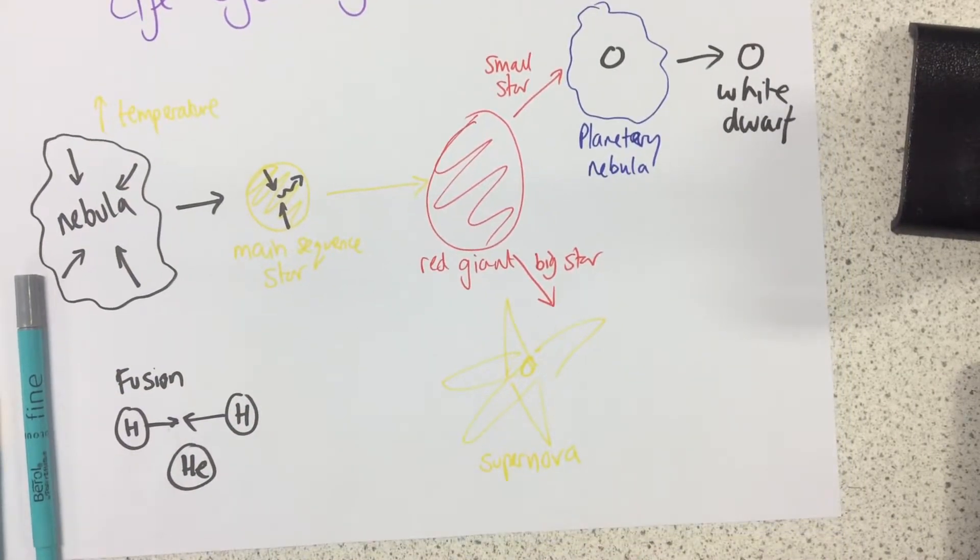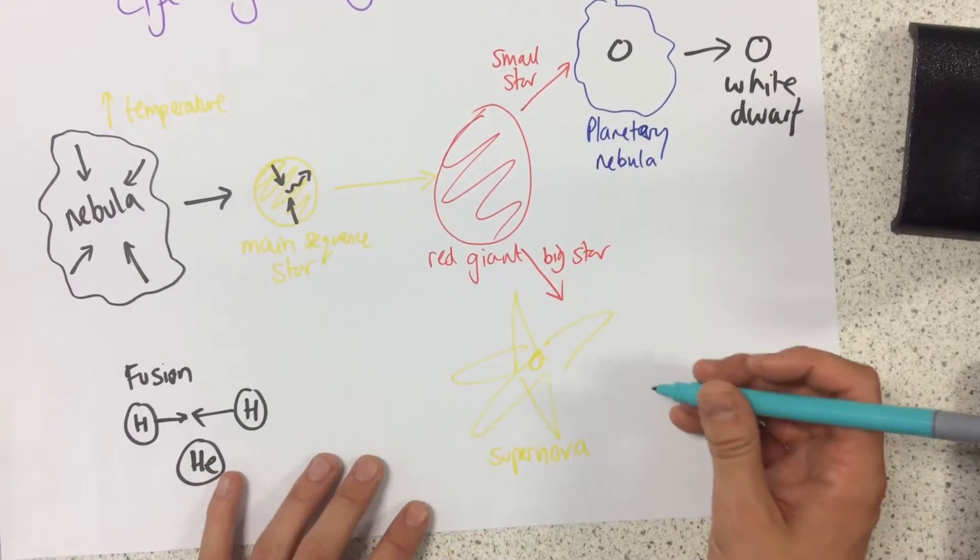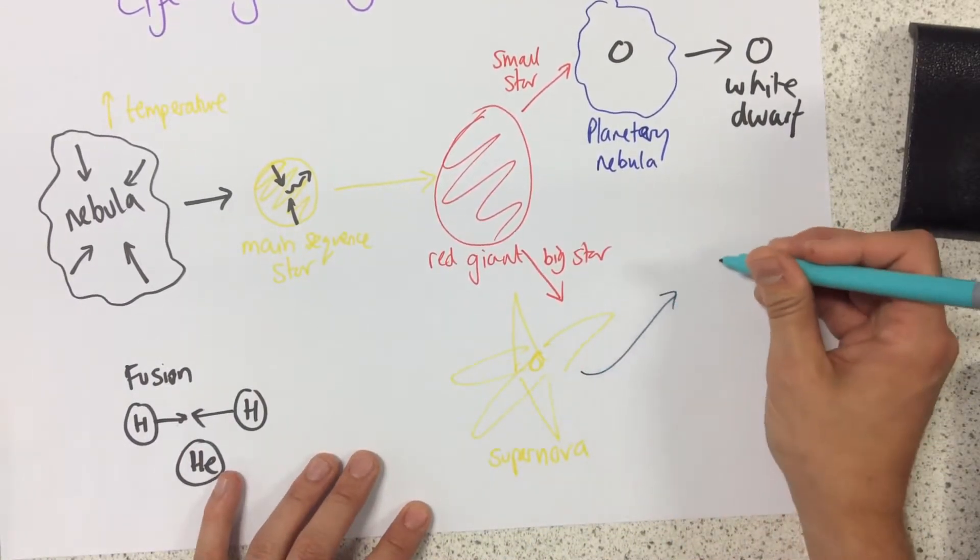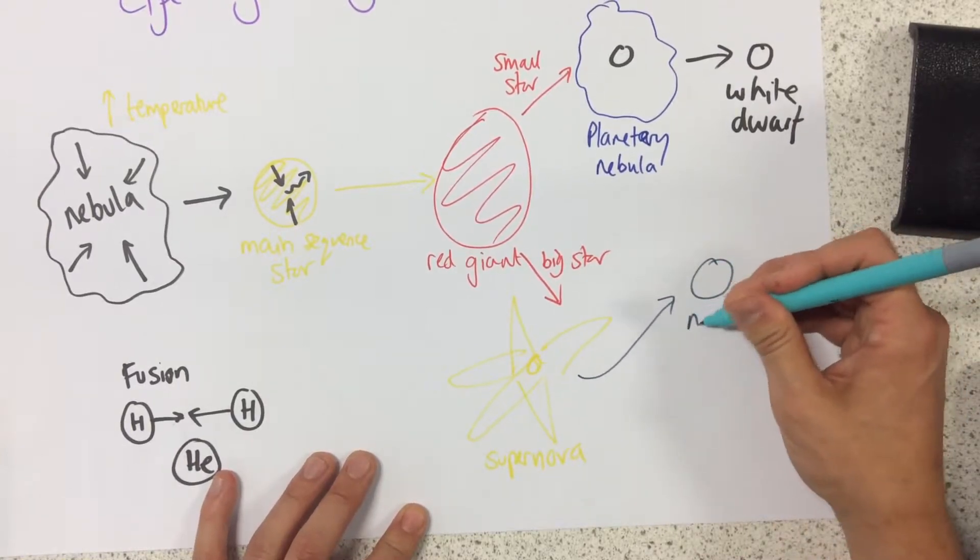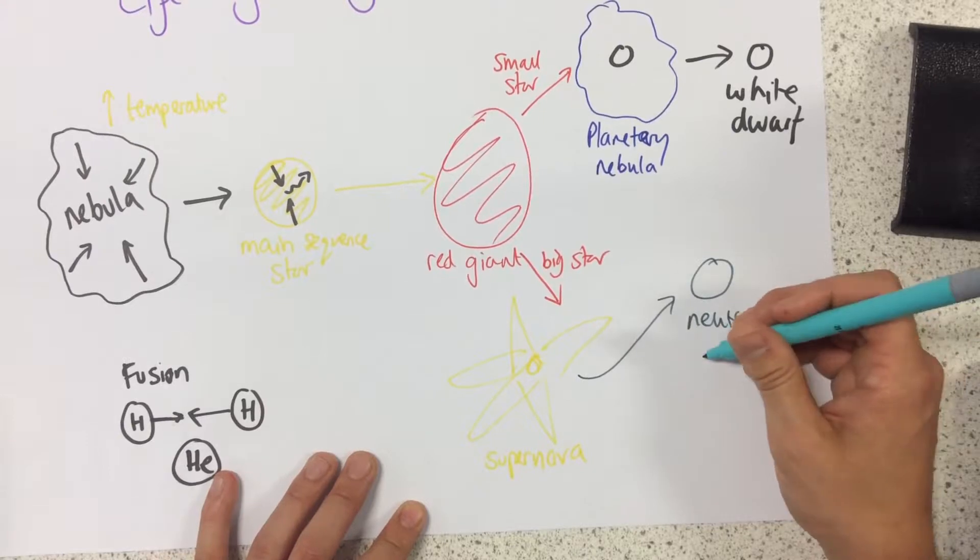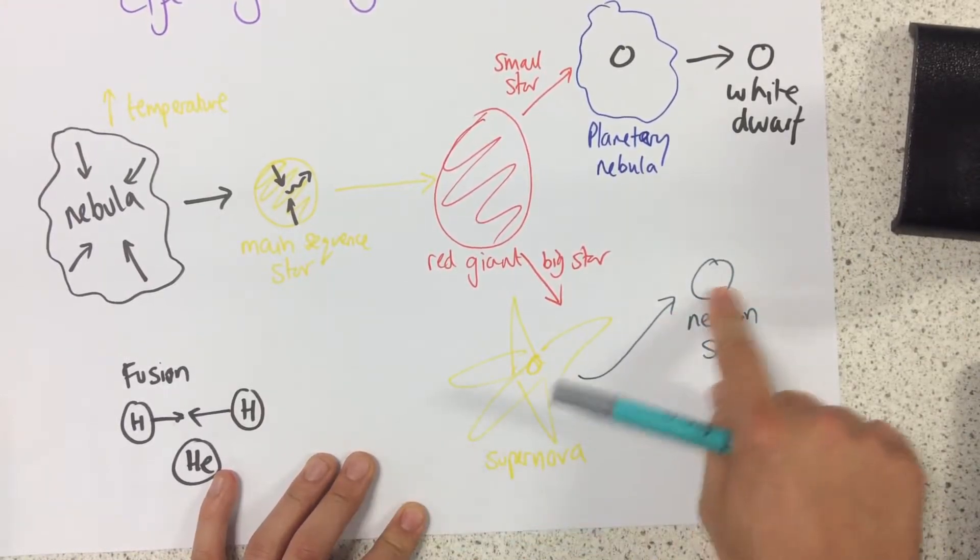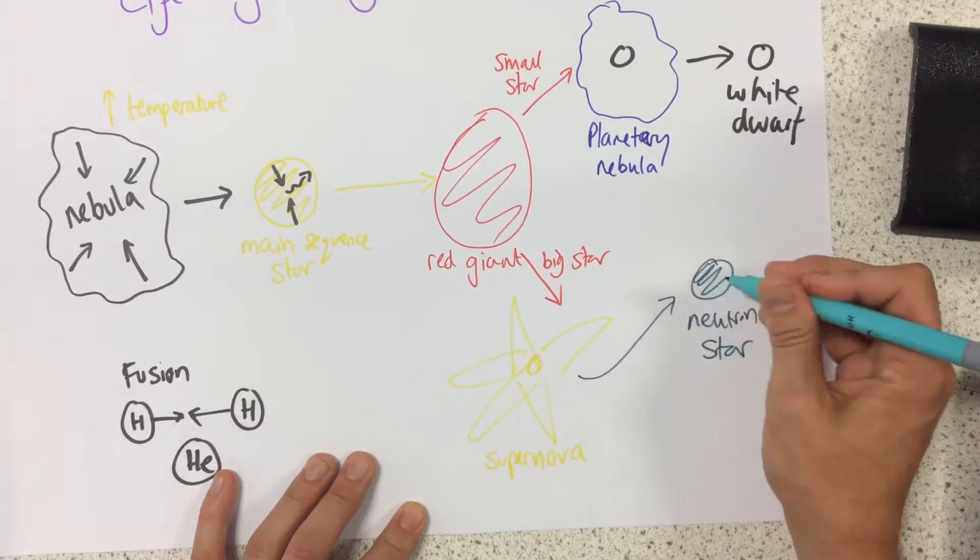After our supernova, we have two potential different fates. One is a neutron star. It's just a very dense core left over from this supernova.